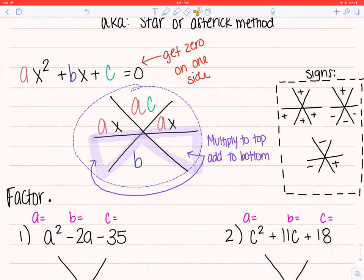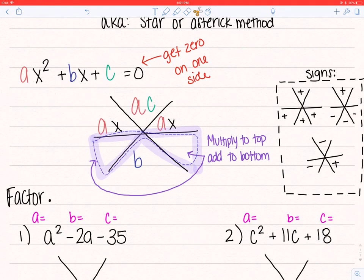Here is the skeleton of the snowflake. You have to always fill in a times c on top, whatever number that is, b on the bottom, ax and ax. Now the two blank spots that you see in the highlighted area, that is two numbers that will multiply to the top and then add to the bottom.